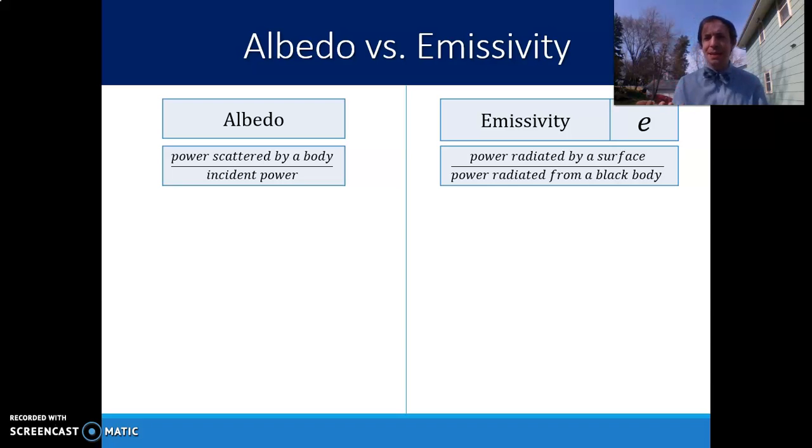In this video, we're going to refer to emissivity based on how much something would absorb. Albedo is the opposite of emissivity. Albedo is the power that is scattered by a body divided by the incident power.